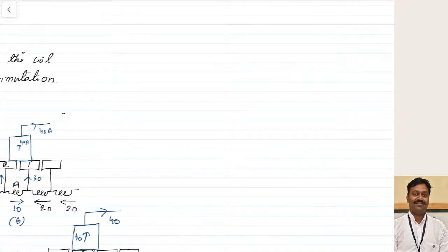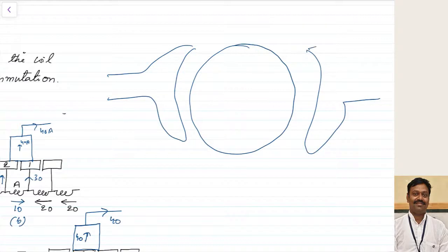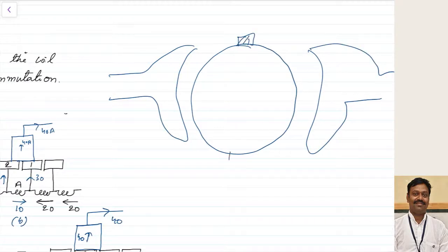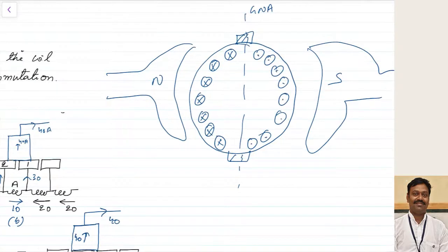In the last class, we have seen that if this is my rotor and this is my brush axis — brushes are kept along the geometrical neutral axis. This is my North Pole, this is my South Pole. Whichever conductors are kept under the North Pole, they will induce a cross in them, and whichever conductors are under the South Pole, they will induce a dot in them. The EMF at any point is B into L into V into sin theta, where theta is the angle between B and V.